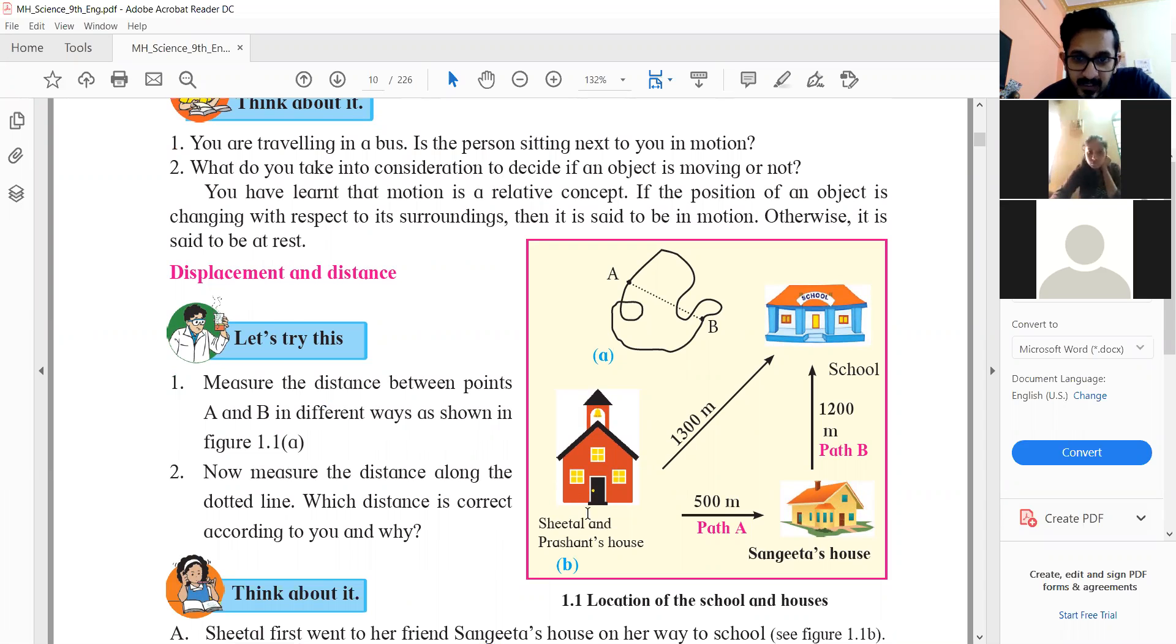In the first case, the two people have gone to Sangeeta's house, 500 meters in this direction, then the second one was going to go in the same direction. Because they are finally starting here and the school is going in the same direction. Is it clear? Both cases, if we go via Sangeeta or go directly, finally they have to reach the school. So in both cases, their displacement is the same, but when they go via Sangeeta, their distance is increasing.